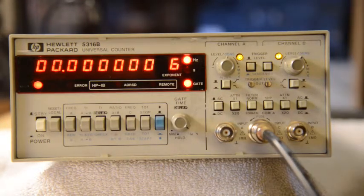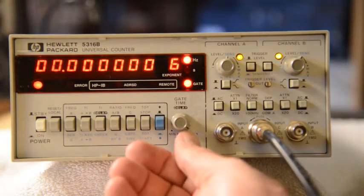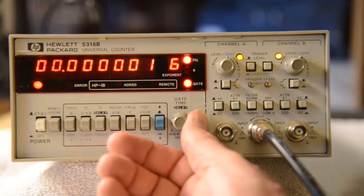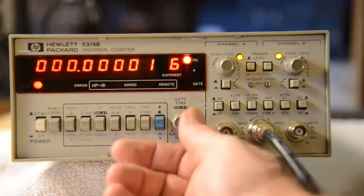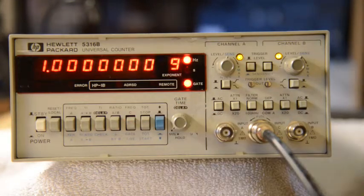I'll now decrease the gate time. And now you see that there is one digit. And I go lower. Now you see it's 1 times 10 to the ninth.